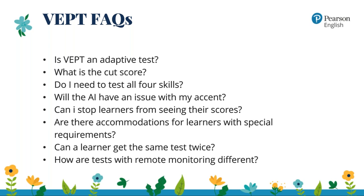What is the cut score for VEPT? That's entirely up to your institution — your university or school — to determine. Set scores that you feel comfortable with by aligning your target VEPT score to other tests that you might use. Do I need to test all four skills? Yes, with VEPT you do. We use integrated item types which always test listening, reading, speaking, and writing. If you only need a speaking test or a writing test, there are other assessments in the Versant portfolio that you might want to look at.